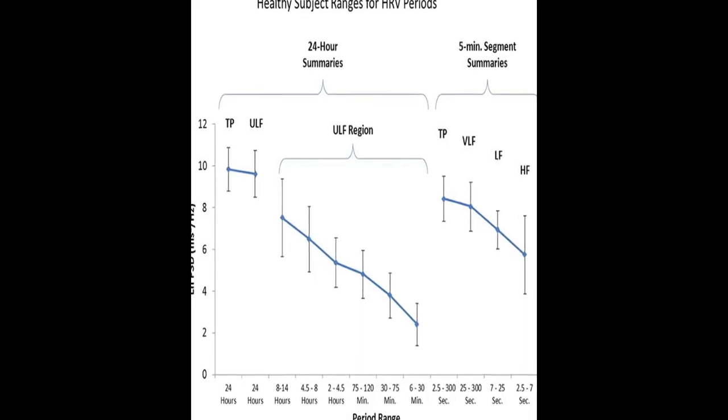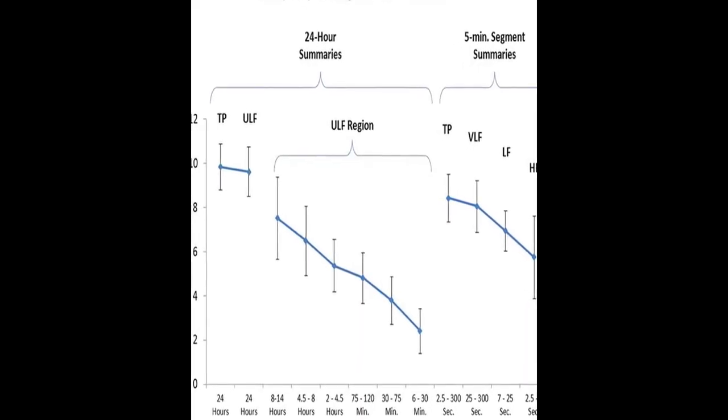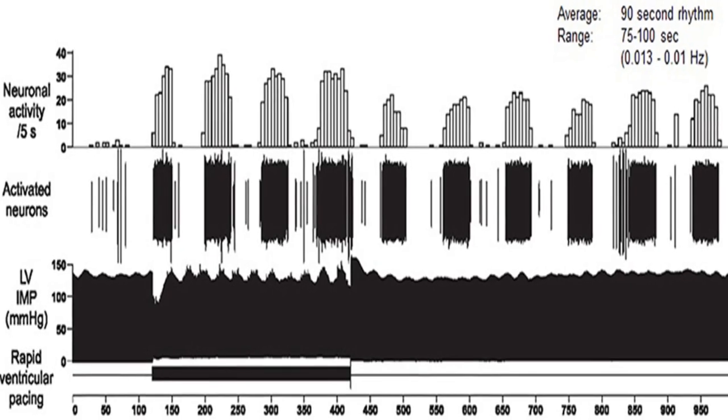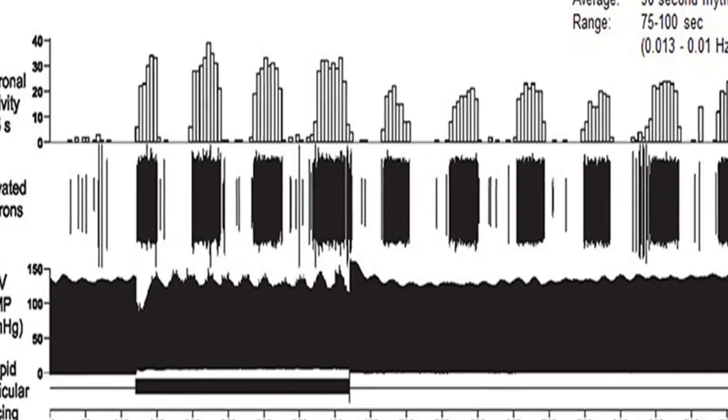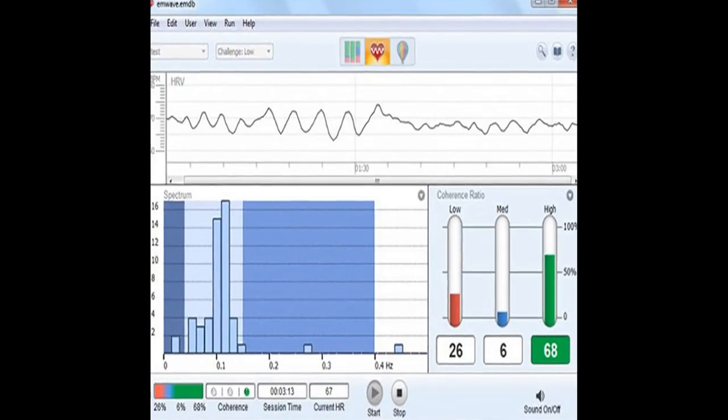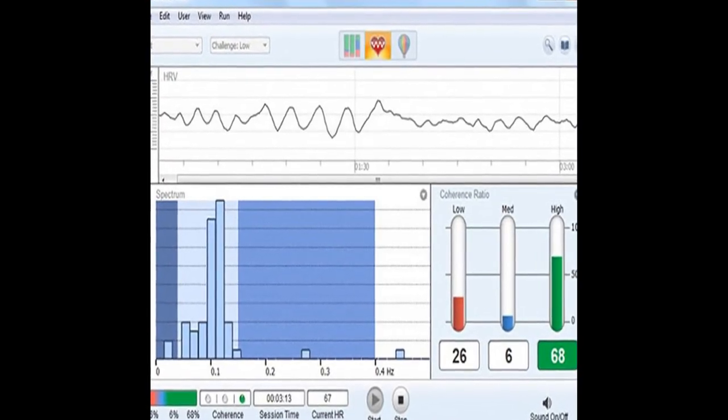The article integrates several theoretical models and concludes that a coherent heart is characterized by both complexity and stability over longer time scales. Future research should expand understanding of the heart's influence on the brain.